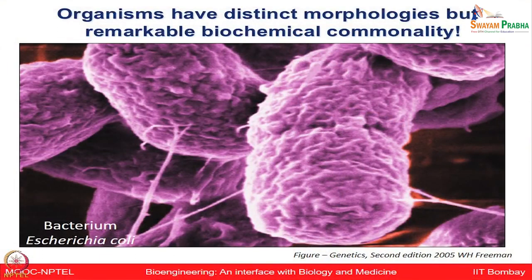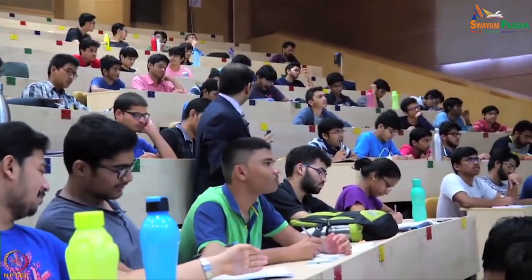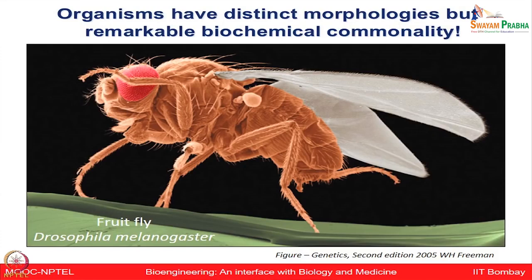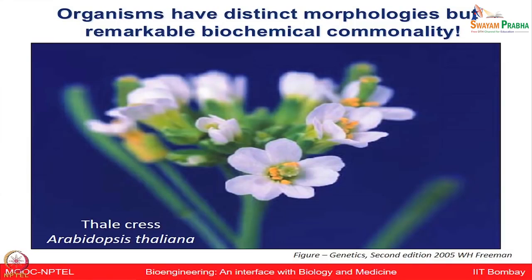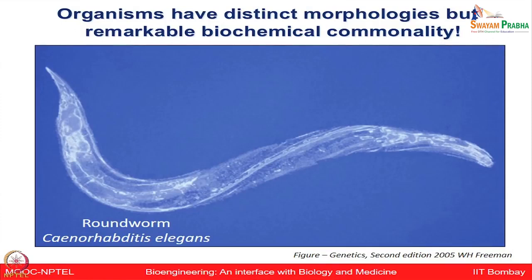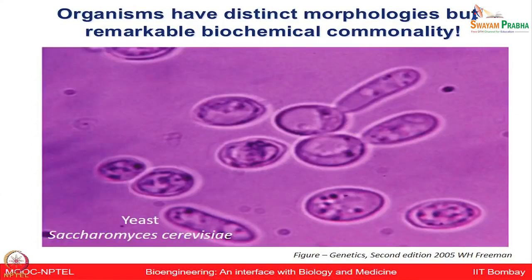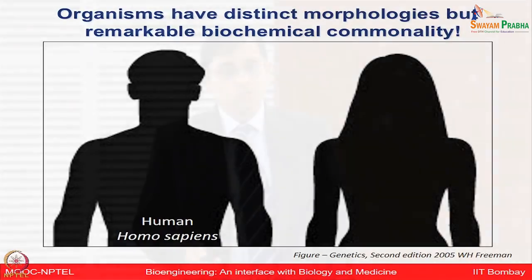Organisms have very distinct morphology but still have remarkable commonality at the biochemical level. On the screen I am showing you images — can you identify these organisms? They are: Escherichia coli (bacteria), Drosophila melanogaster (fruit fly), Arabidopsis thaliana (a plant), C. elegans (round worm), Saccharomyces cerevisiae (yeast), and Homo sapiens (human). If you look at them at the morphological level they are very different, but when you go to their DNA, RNA, and protein level — at the biochemical properties — you will be surprised to see how remarkable the uniformity is at the molecular level.